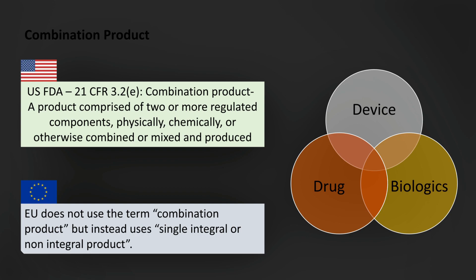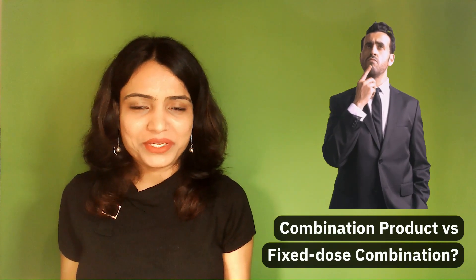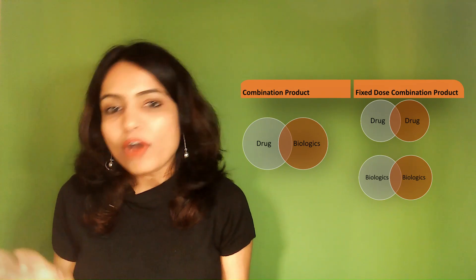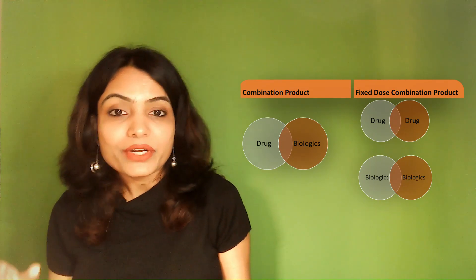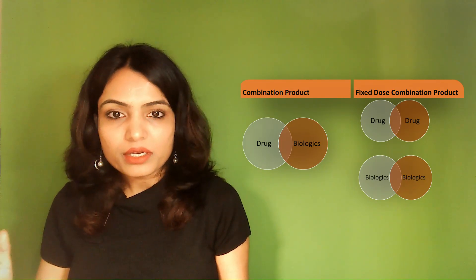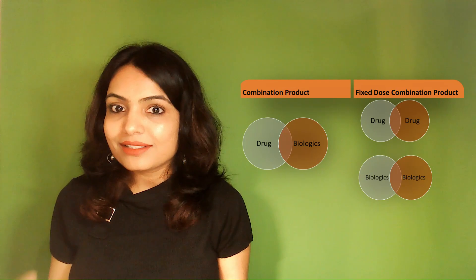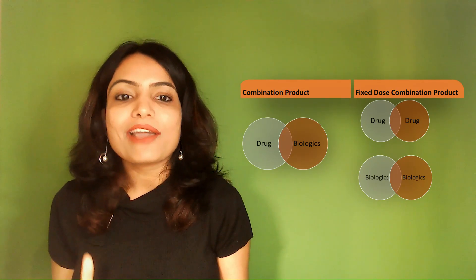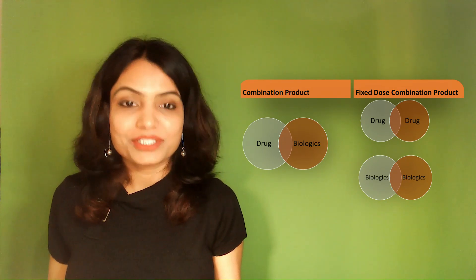So in the US they are called combination products, but in the EU they are called by a different name. We have to be careful not to use the term 'combination products' in the EU context. Now, the next question: are combination products and fixed dose combination products the same? The answer is no. In fixed dose combinations (FDCs) you have one drug combined with another drug, or one biologic combined with another biologic — but not a combination of drug with biologic. If you have a drug combined with a biologic, that falls into the category of combination product, not fixed dose combination.